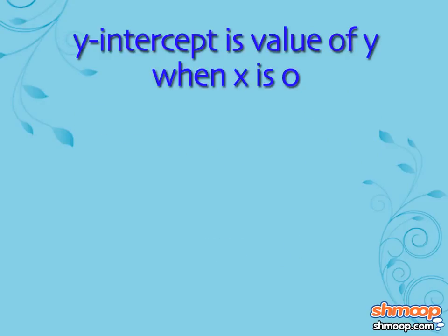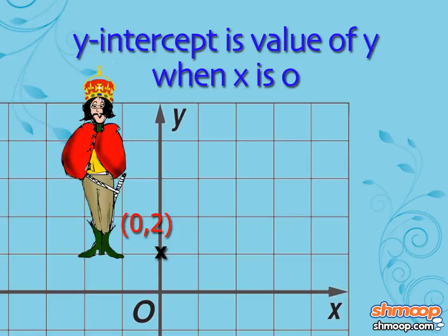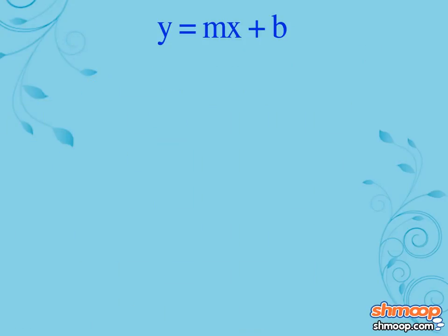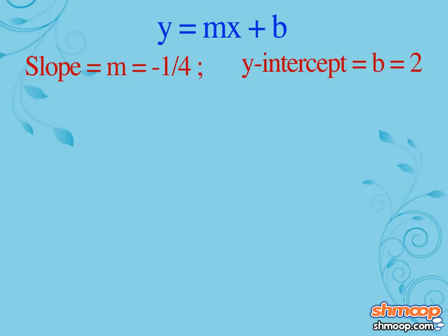The y-intercept is just the value of y when x is zero. We already know that because the prince is standing at that exact point. Now we can substitute our slope and y-intercept into the equation, then rearrange it into standard form.